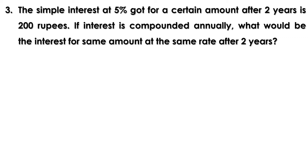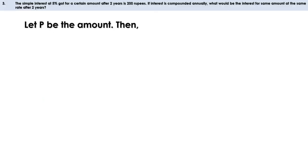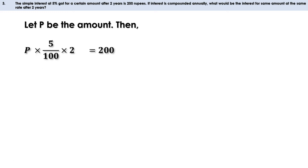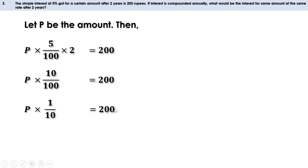First we have to find the amount deposited, then find the compound interest for the same amount at the same rate after two years. Let us take the amount deposited as P. Rate of interest is 5% and simple interest after two years is 200 rupees. Simple interest equals P × 5/100 × 2, which equals 200. So P × 10/100 = 200, simplifying to P × 1/10 = 200.